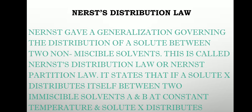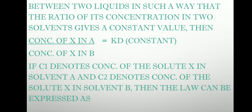The law states that if a solute X distributes itself between two immiscible solvents A and B, for the derivation, consider solvent A and solvent B which are immiscible with each other, and solute X dissolves in both solvent A and solvent B at constant temperature. The temperature of both solvents and the solute must be the same — you cannot heat solvent A more than solvent B. A common constant temperature must be maintained to determine the distribution coefficient.